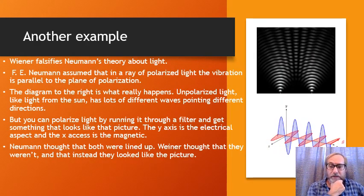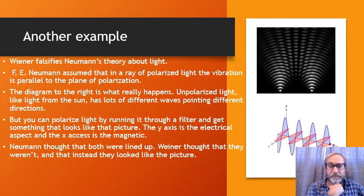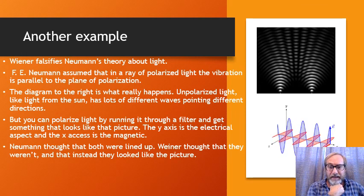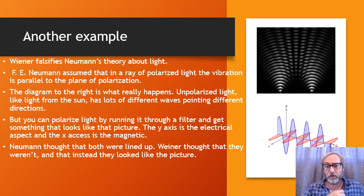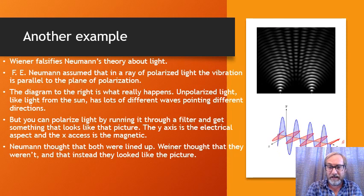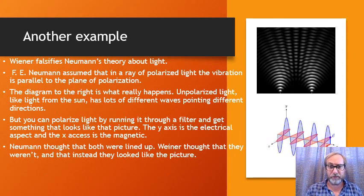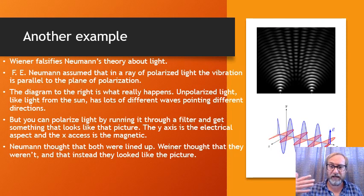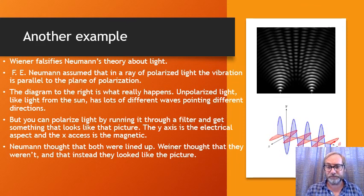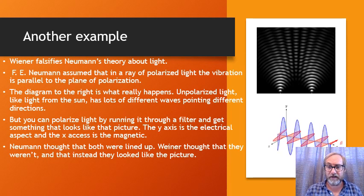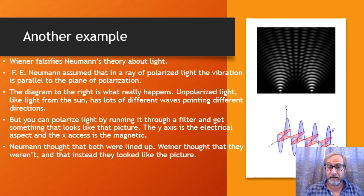Here's another example Duhem provides involving polarized light. Before polarization, a light ray has waves shooting out in every direction — like the bristles of a branch. When you send it through a filter, only one wave direction passes through. We now know light is an electromagnetic wave with oscillations in the electrical and magnetic components at right angles to each other.